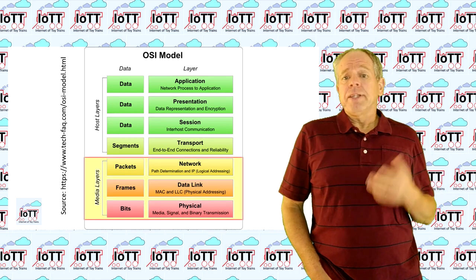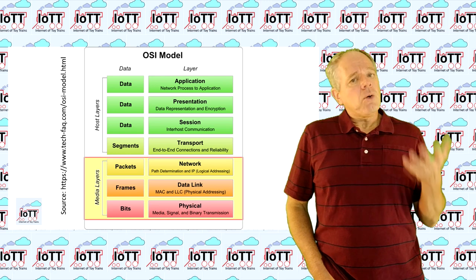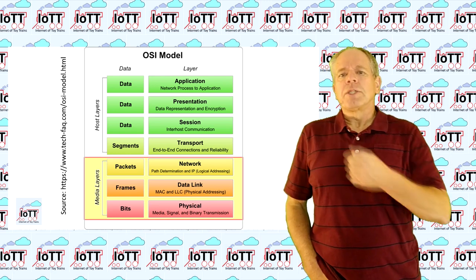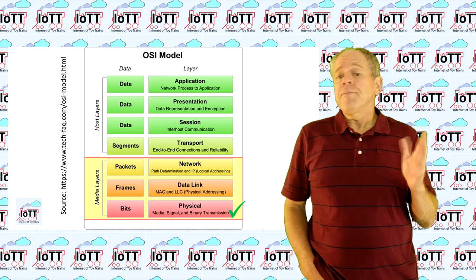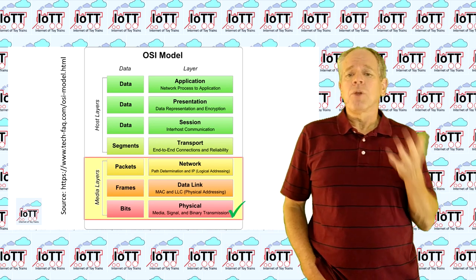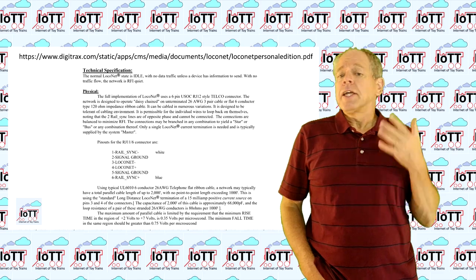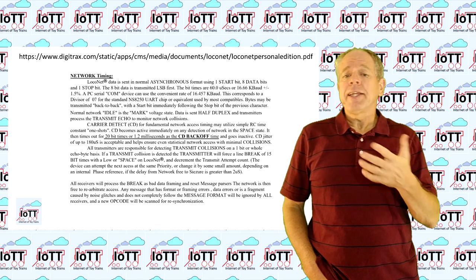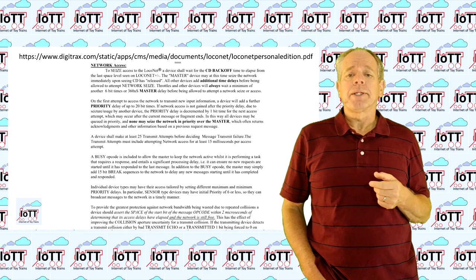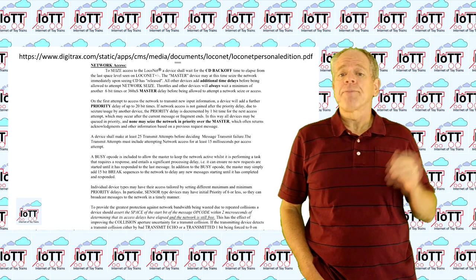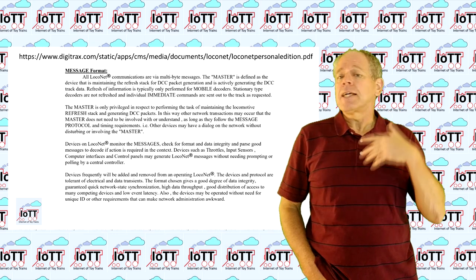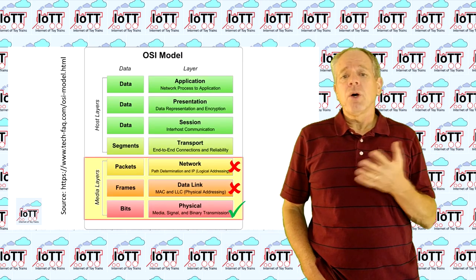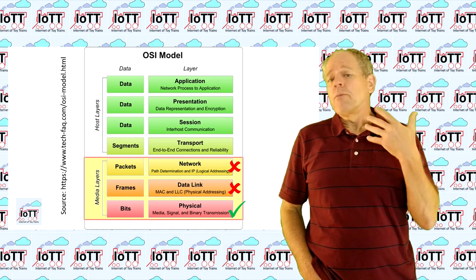To understand LocoNet we can compare the LocoNet specification to layers 1 through 3 of the OSI model. As it turns out, the physical layer of LocoNet is well defined, including electrical characteristics, bit timing, network access, and message format. But that's it — there is simply no such thing as a defined data link or network layer. LocoNet nodes have no addresses, no MAC address, nor an IP address.